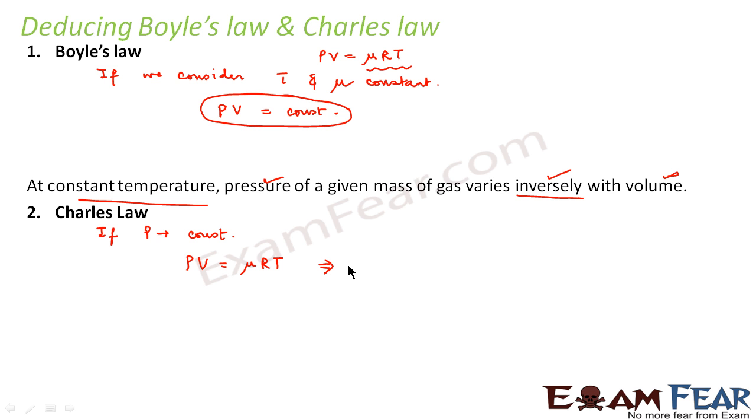So let us take all the constant terms on right hand side. So we will see that V by T will be equal to μR by P. So this entire thing will be constant because we are considering μ and P as constant. So V by T becomes constant.